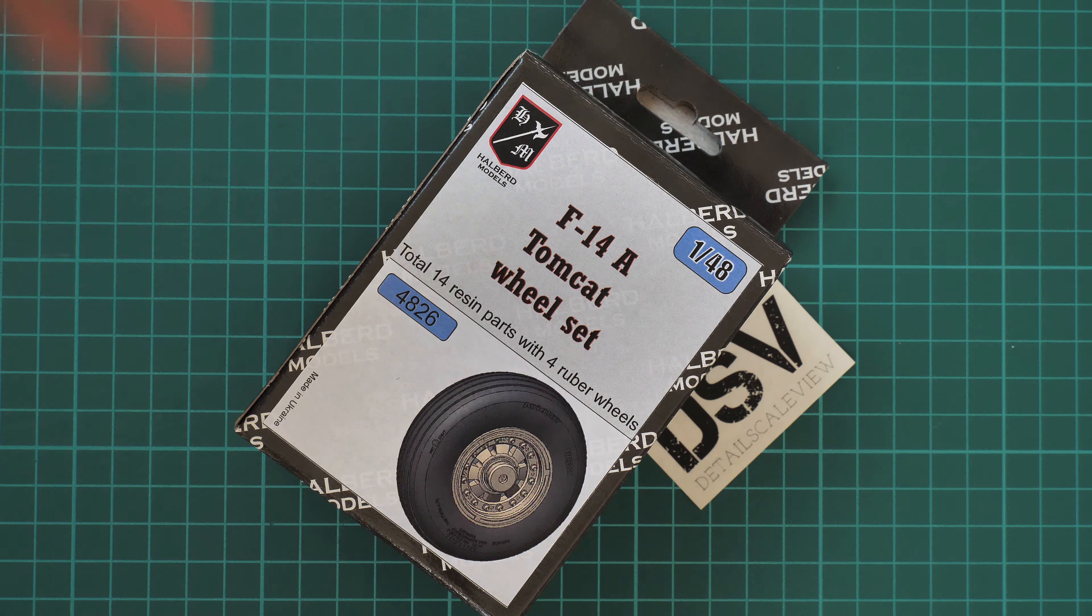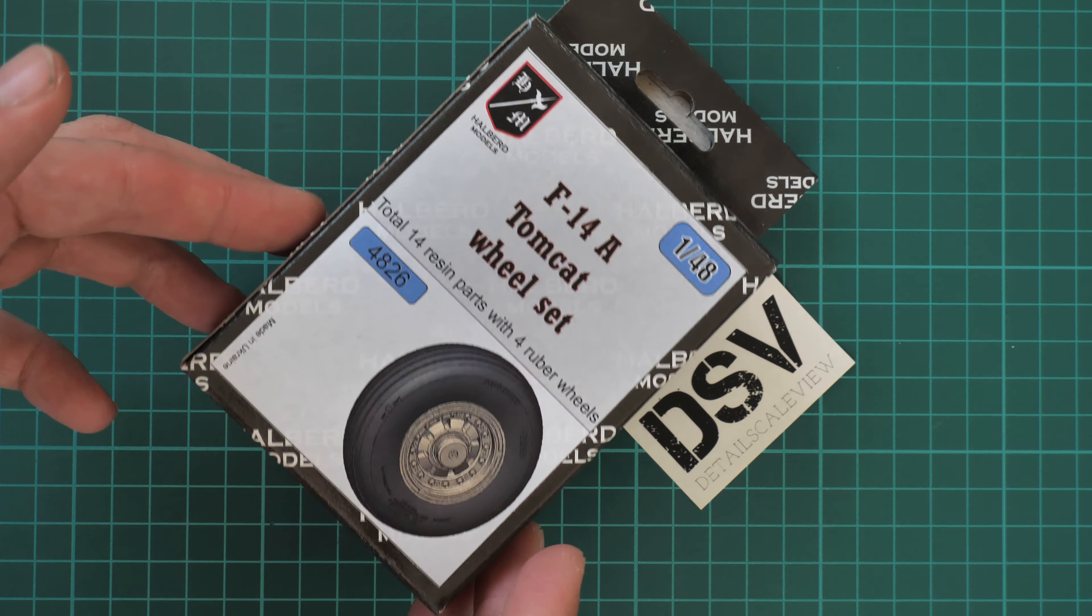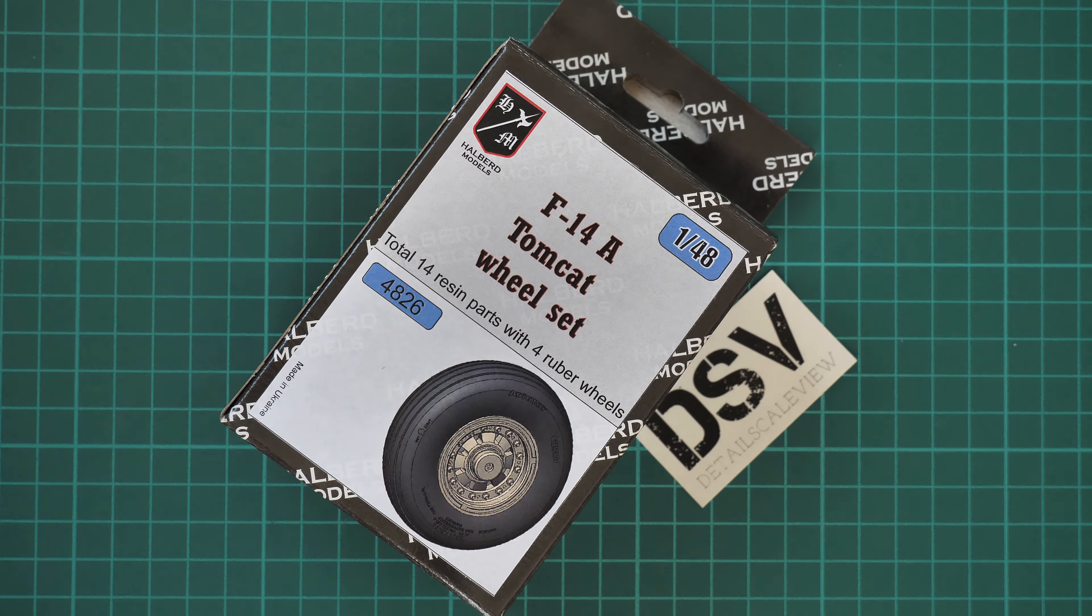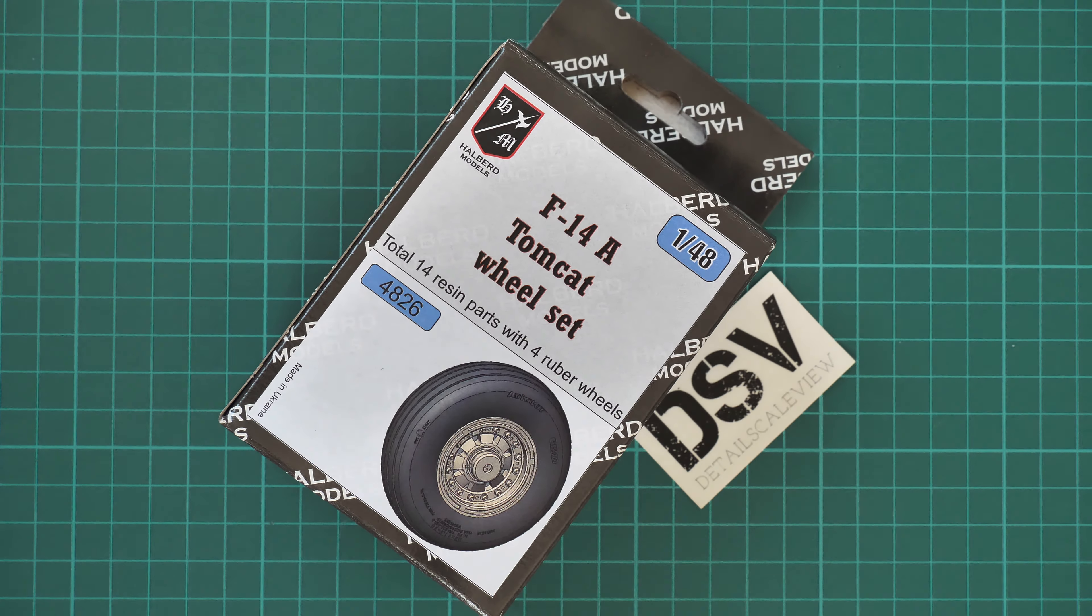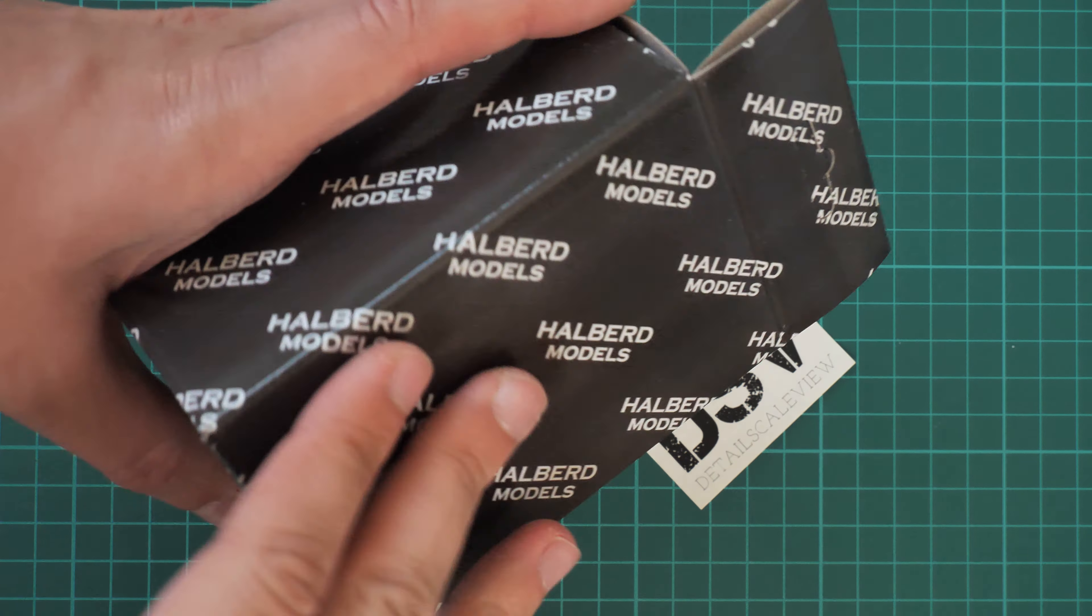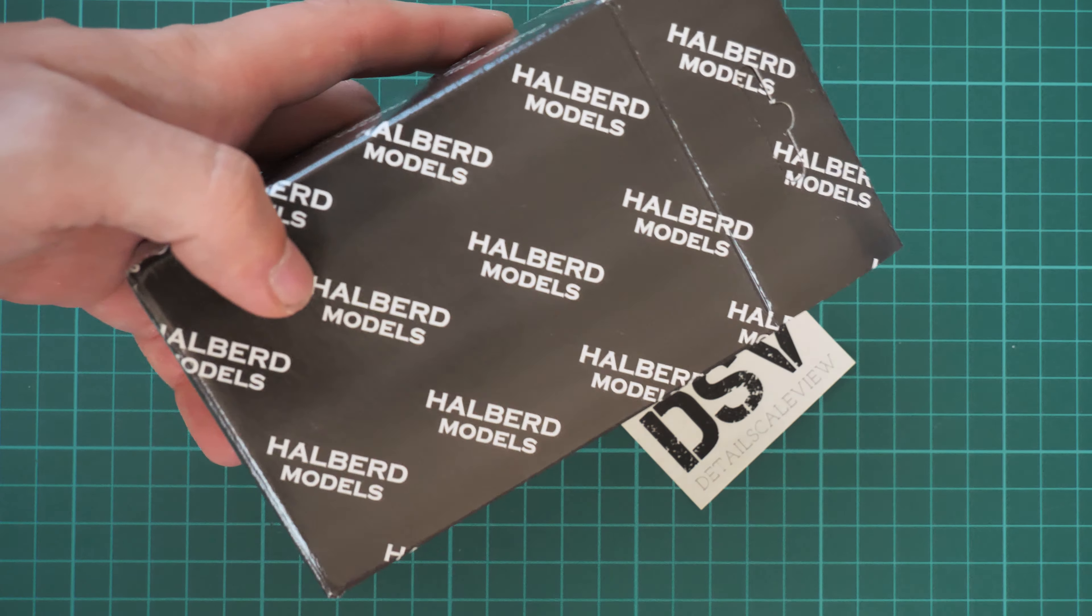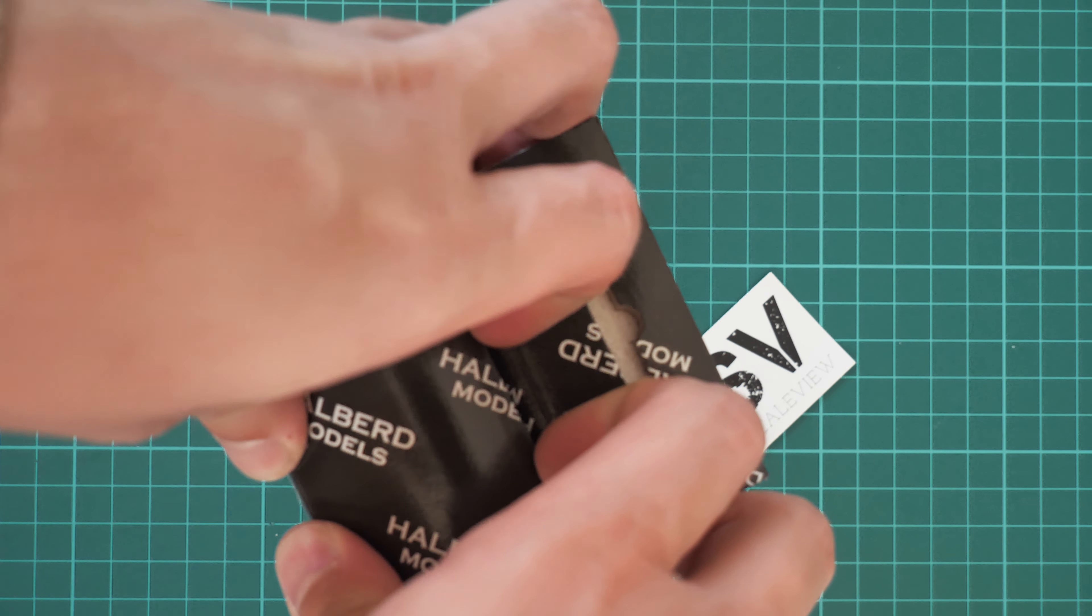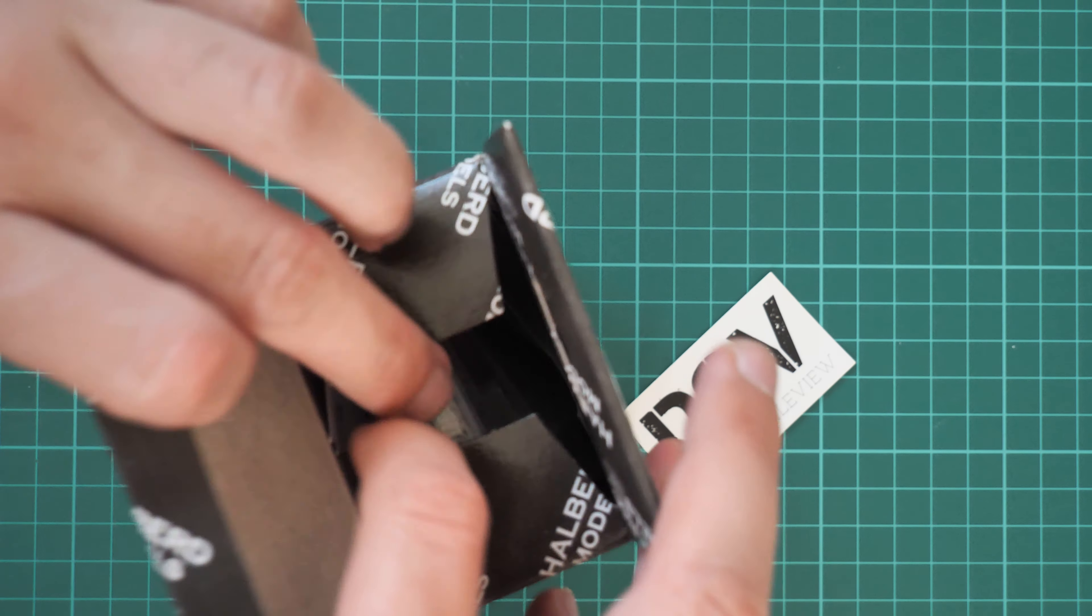First of all, packaging here is quite typical—a small black box. I'm going to increase the frame rate so you can see everything in a bit more smooth fashion. From the other side, we can see there is just a Halberd Models logo and that's pretty much all. So let's open it and take a look inside.